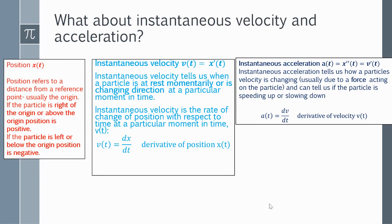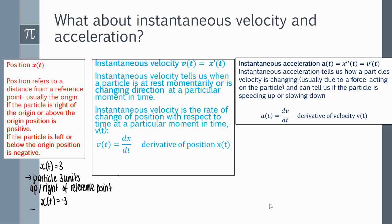When we have a particle moving along a straight line, we can have the position of the particle x(t). Position refers to the particle's distance from a reference point, usually the origin. If the particle is right of or above the origin, the position is normally positive — for example, x(t) = 3 means the particle is 3 units right or above. If the particle is left or below the origin, its position is negative; so a position of minus 3 means the particle is 3 units to the left, down, or in the negative direction from our reference point.